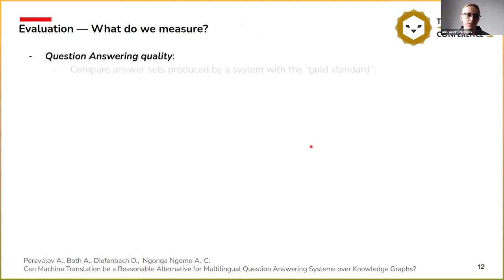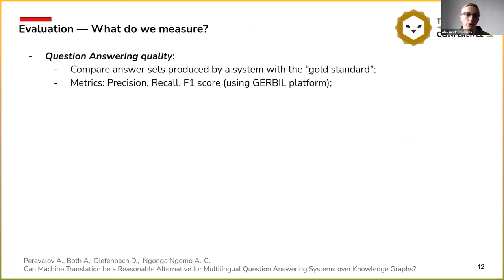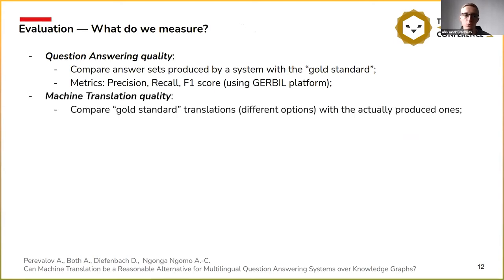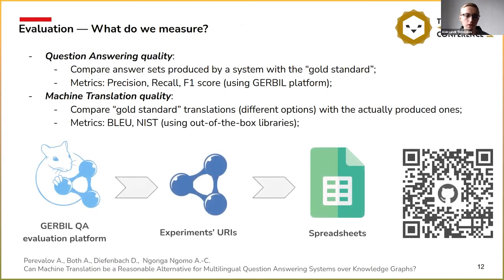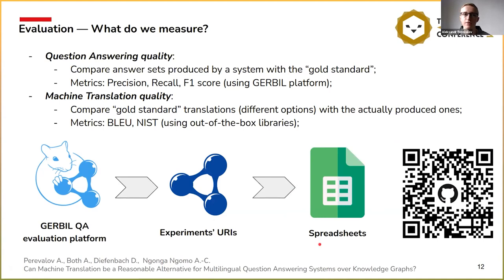What do we measure? We measured question answering quality by comparing the answer set produced by the system with the gold standard, measuring precision, recall, and F1 score. We also measured machine translation quality by comparing gold standard questions with the actually produced ones. For question answering quality evaluation we used the well-known Gerbil QA evaluation platform, which produces experiment URIs that we extract into a spreadsheet and semi-automatically analyze. The source code and experimental data are available via the QR code shown.